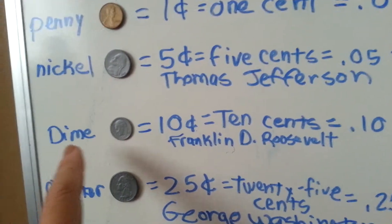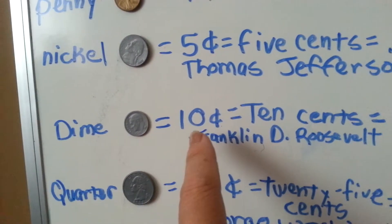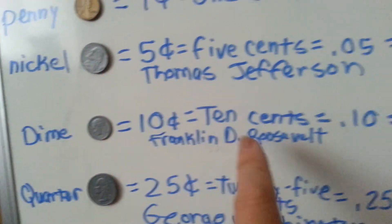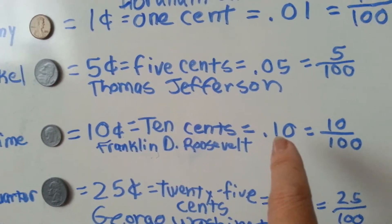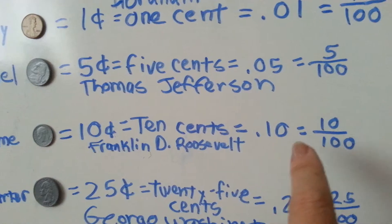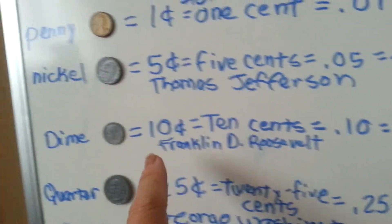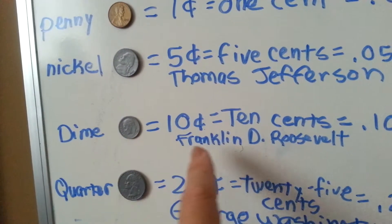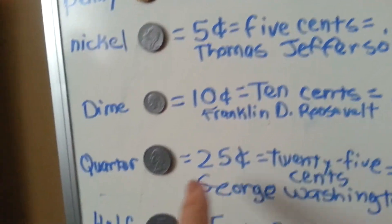This is a dime, ten cents, equal to .10 or ten one-hundredths of a dollar, and has a picture of Franklin D. Roosevelt on it.